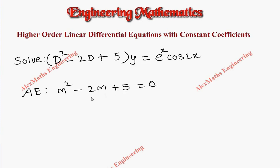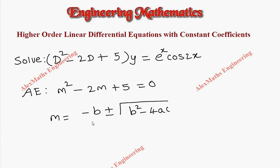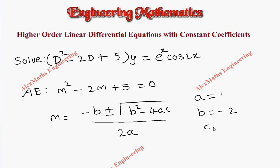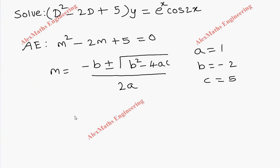The product is 5 and sum is minus 2. We cannot factorize, so we go for using the quadratic formula. So m equals minus b plus or minus root of b squared minus 4ac, whole divided by 2a. Here a equals 1, b equals minus 2, and c equals 5.